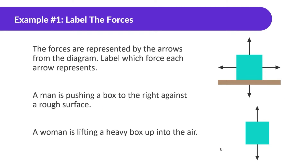The forces are represented by arrows. For diagram one: a man is pushing a box to the right against a rough surface. Pushing to the right is the force applied. The box is pulled down by the force of gravity. The ground holds the box up — that's the normal force. And the leftward force, because it's a rough surface, indicates friction — that's the force of friction.